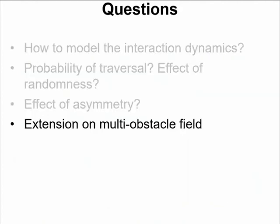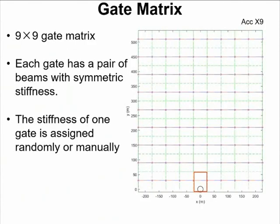So here in this case, we can extend it to a larger terrain with multiple obstacles. Here's a one terrain of a gate matrix. There are 9×9 gates, and each gate has a pair of beams with symmetric stiffness, just like our single simulation shows before. And the stiffness of each gate can have different stiffness, and we want to test on this field to see how the robots can navigate themselves to the exit.